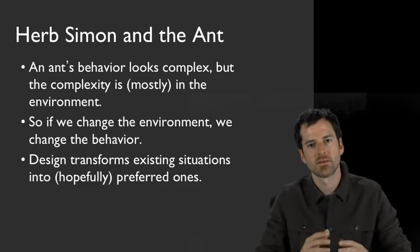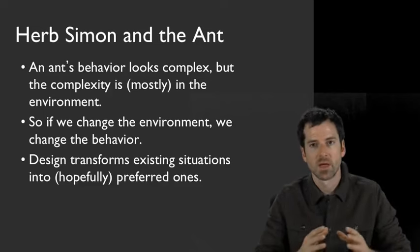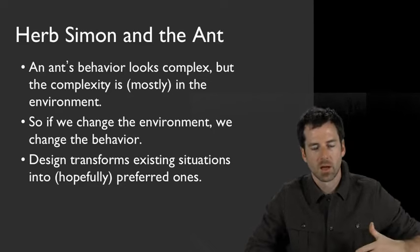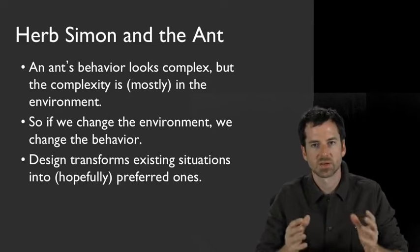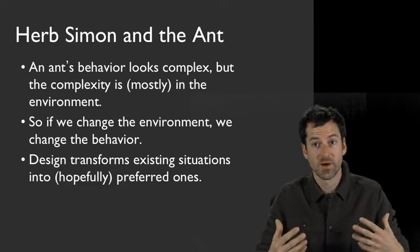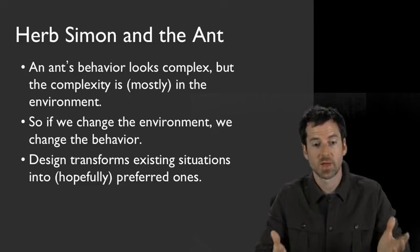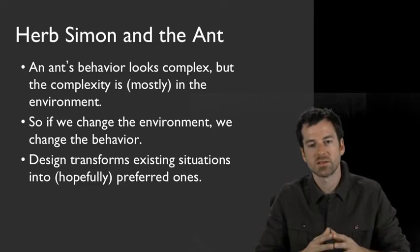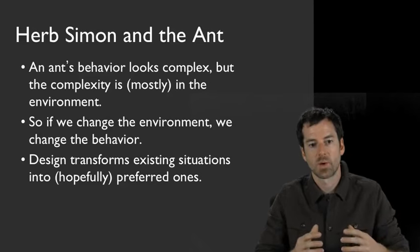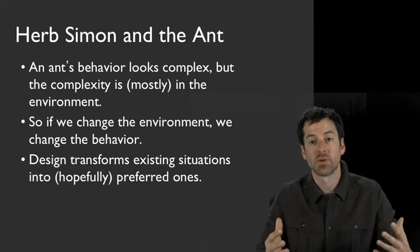Herb Simon tells the story of watching an ant cross the sand in the desert, and the ant's behavior has a whole lot of weaves and its navigation is quite complex. And Herb noticed that a lot of the complexity that was apparent there came from the environment, from the structure of the desert sand, and that if he changed the environment, he could change the ant's behavior. And this is an example of how design is a way of transforming people's existing situations into hopefully ones that people find preferable.